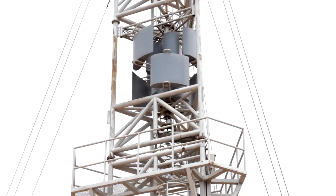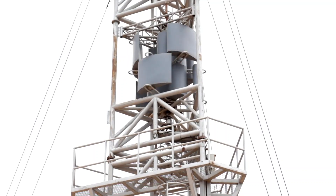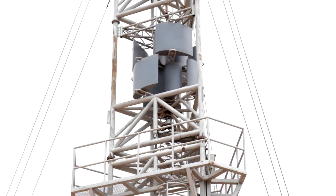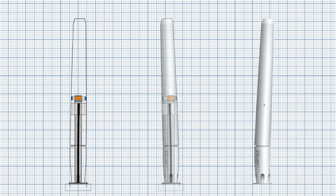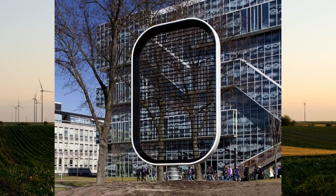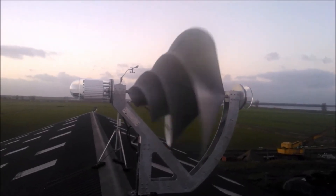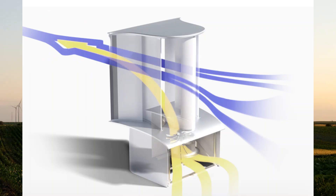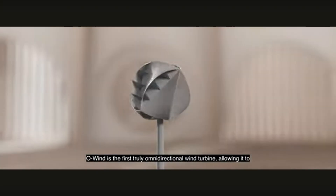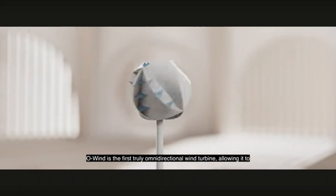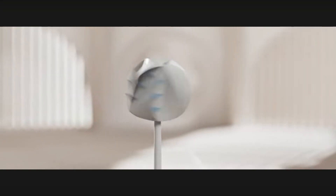In recent years, there has been notable progress in small-scale wind energy technologies tailored for urban environments. Among these are the bladeless vortex shedding turbine, the solid-state wind energy generator, the Liam or Archimedes wind turbine, and the Aeromine system. Now joining these innovative devices is the O-Wind Turbine, a novel omnidirectional wind energy solution designed to harness the chaotic, multidirectional winds found in cities.